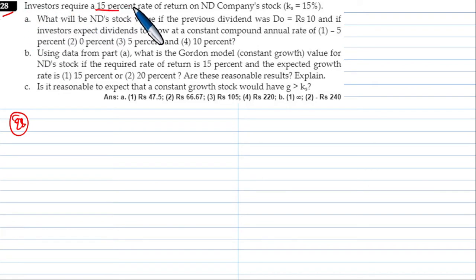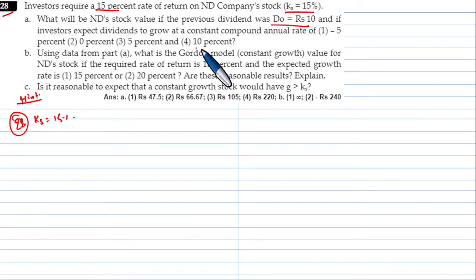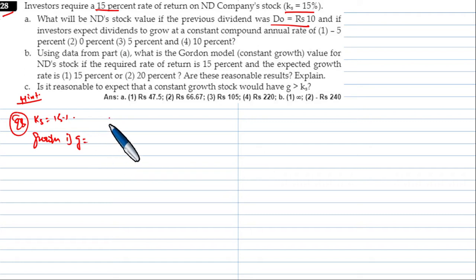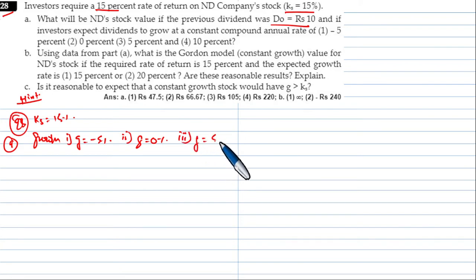Now a new problem. The required rate of return ks is equal to 15%. The stock value if the previous dividend was D0, and if investors expect the stock to grow at a constant compound rate of minus 5%, 0%, 5%, and 10%.